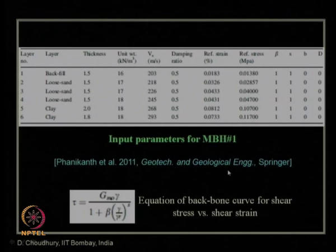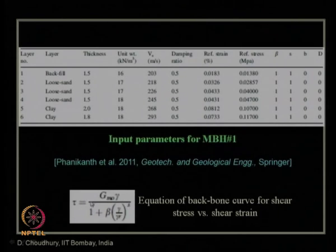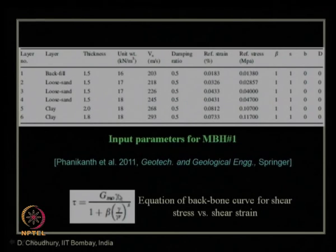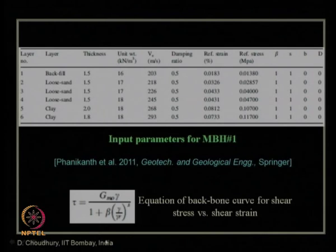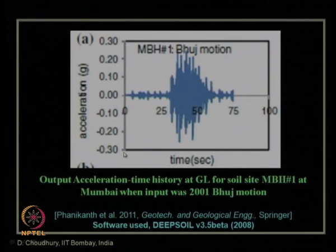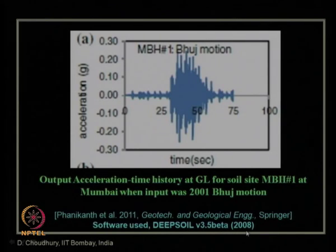The initial values of damping ratio, reference cyclic shear strain, reference stresses, and other coefficients beta and s are defined. The backbone curve is expressed as tau versus gamma, where G_max is the initial tangent modulus — the maximum shear modulus — beta and s are coefficients, gamma is cyclic shear strain, and gamma_R is reference shear strain. The analysis was carried out using the software DEEPSOIL, version 3.5 beta of 2008.